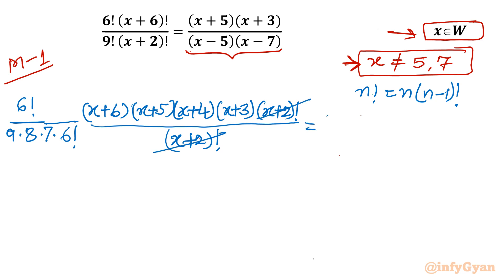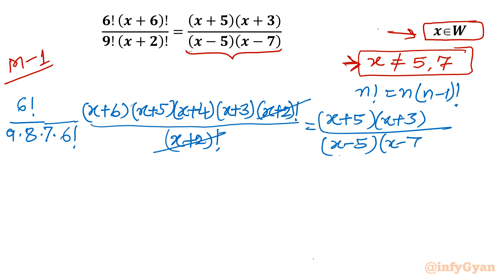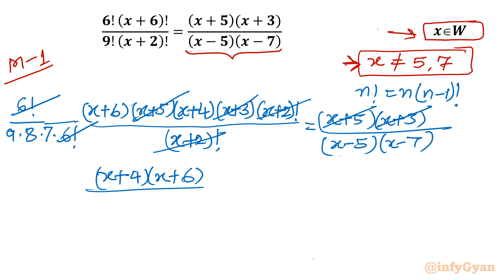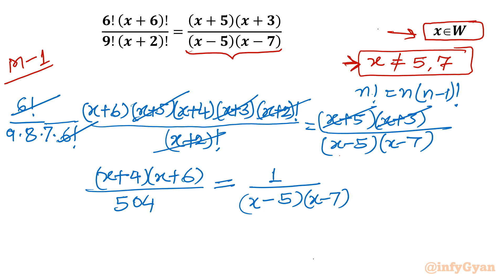Now simply cancel. On the RHS we have (x+5)(x+3) over (x−5)(x−7). We can cancel (x+5) from both sides, and (x+3) from both sides, and 6 factorial also cancels. What remains on the left is (x+4)(x+6) divided by 9×8×7, which equals 504. On the right we have 1 over (x−5)(x−7).